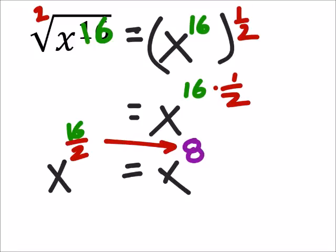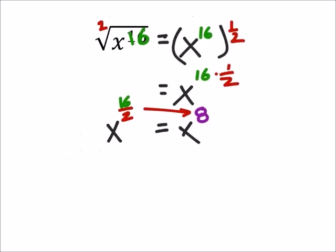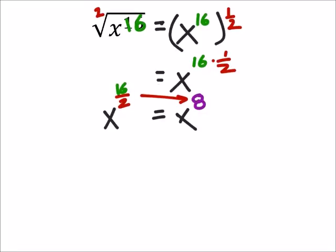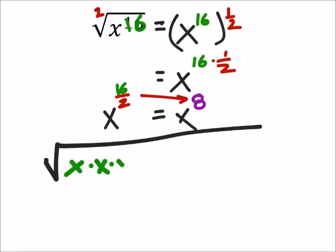So yeah, another way to look at this, and most people don't like this way, but it kind of goes back to the basics, is this would end up being the square root of x times x times x times, we're going to get 16 of these x's.